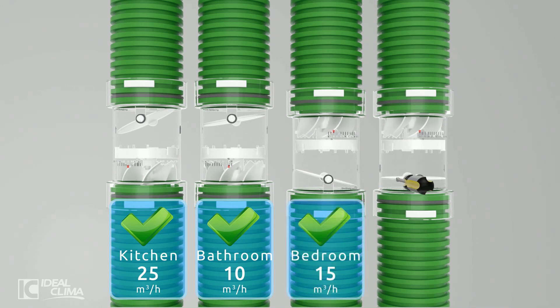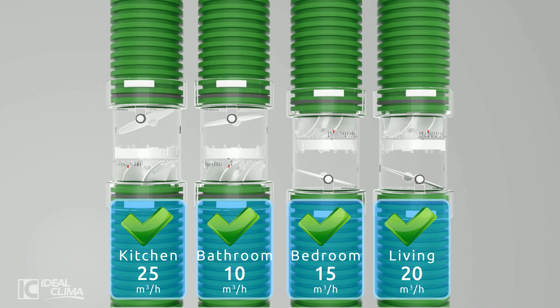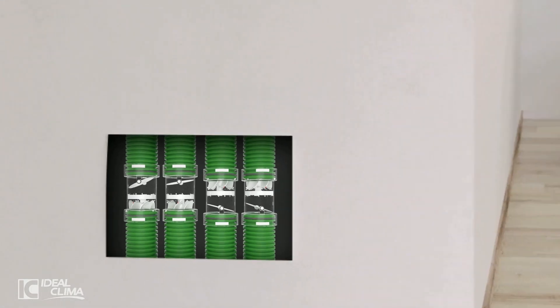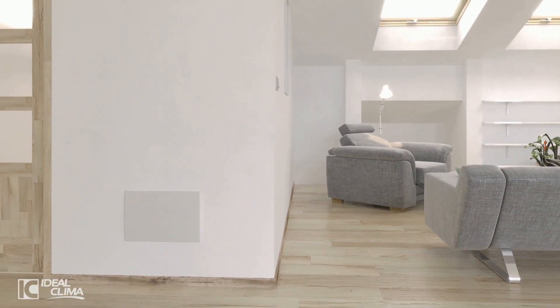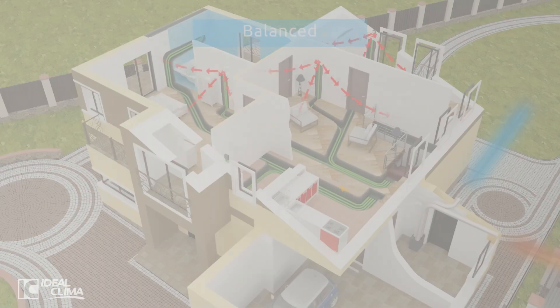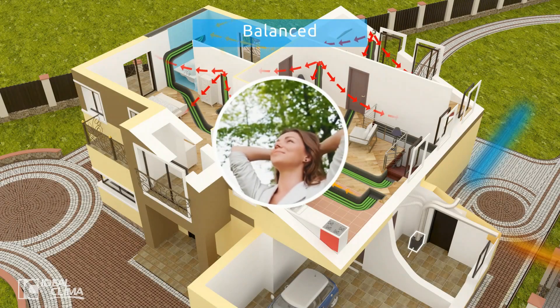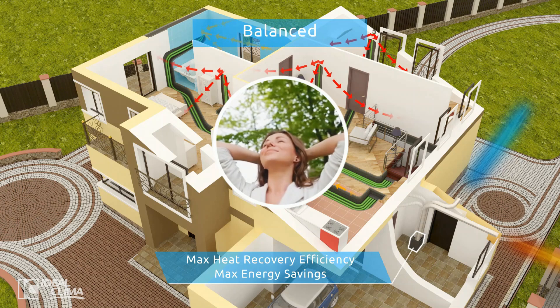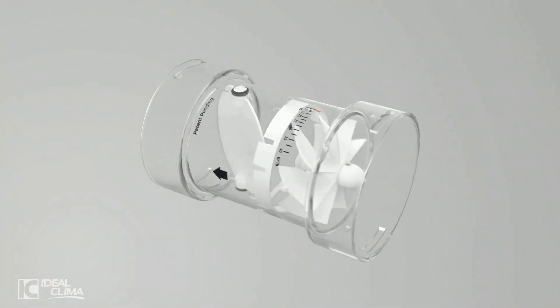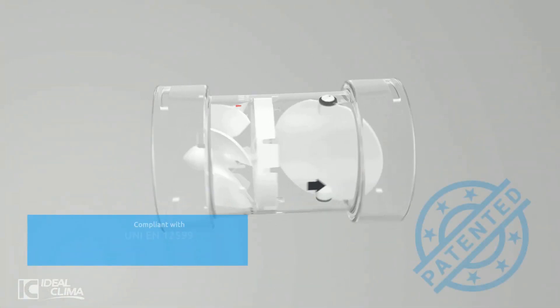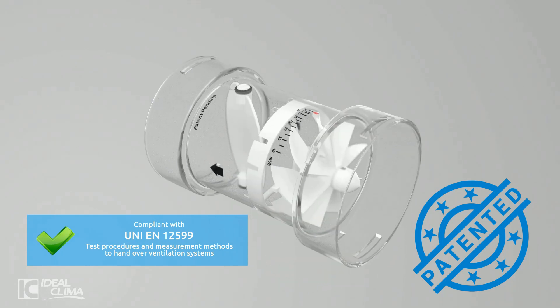MetroVent makes inspection and maintenance easy, allowing you to check the correct system operation at any time. MetroVent means the certainty of installing a balanced system with the correct airflow in every room and with the maximum energy savings. MetroVent ensures compliance with the regulations for ventilation balancing and is protected by international patents.